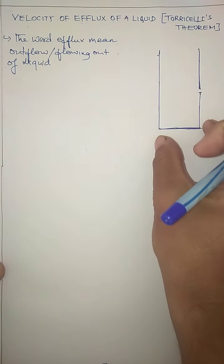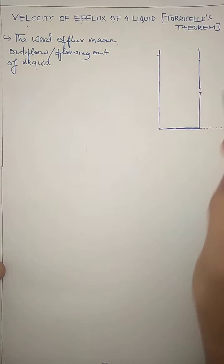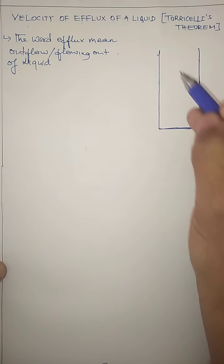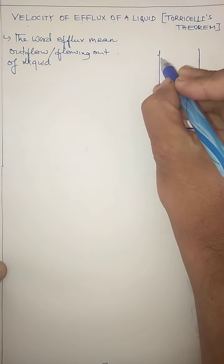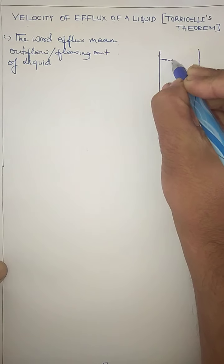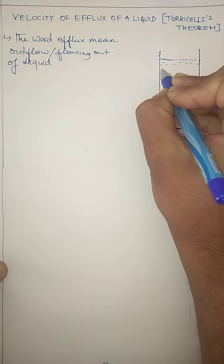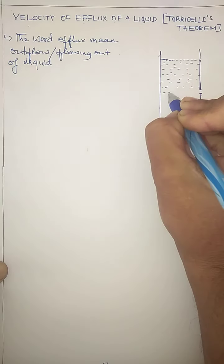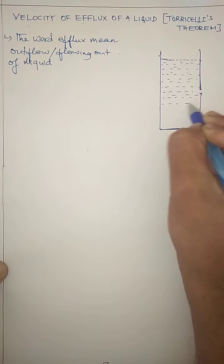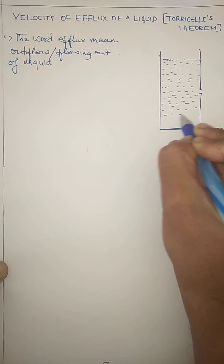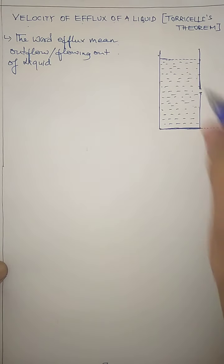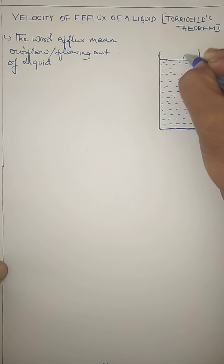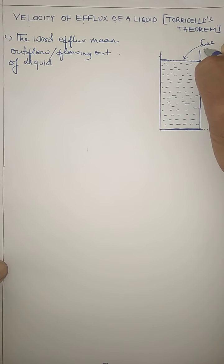Now let me consider a vessel. You can see in the diagram — this is a vessel filled with water up to a certain height. This surface where the liquid sits in the vessel is also called the free surface.